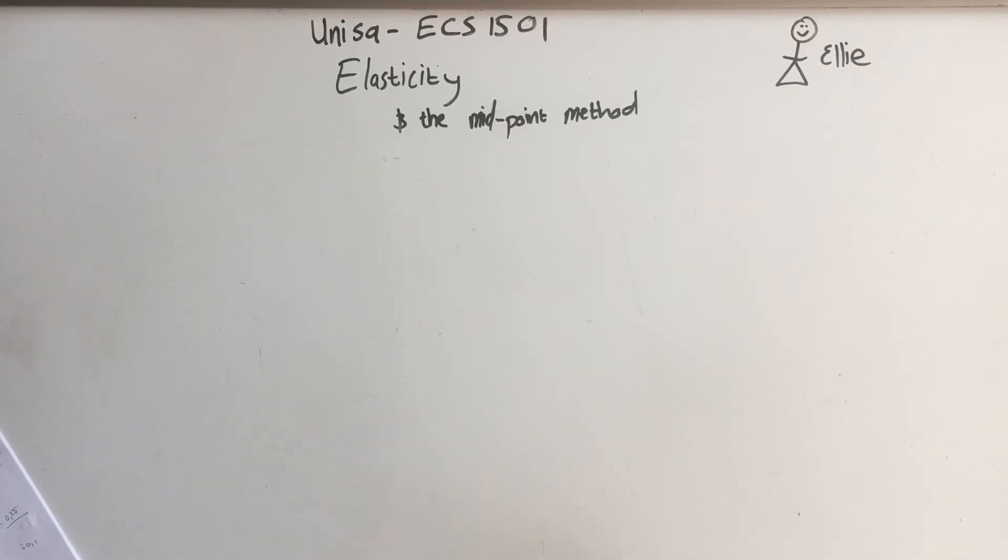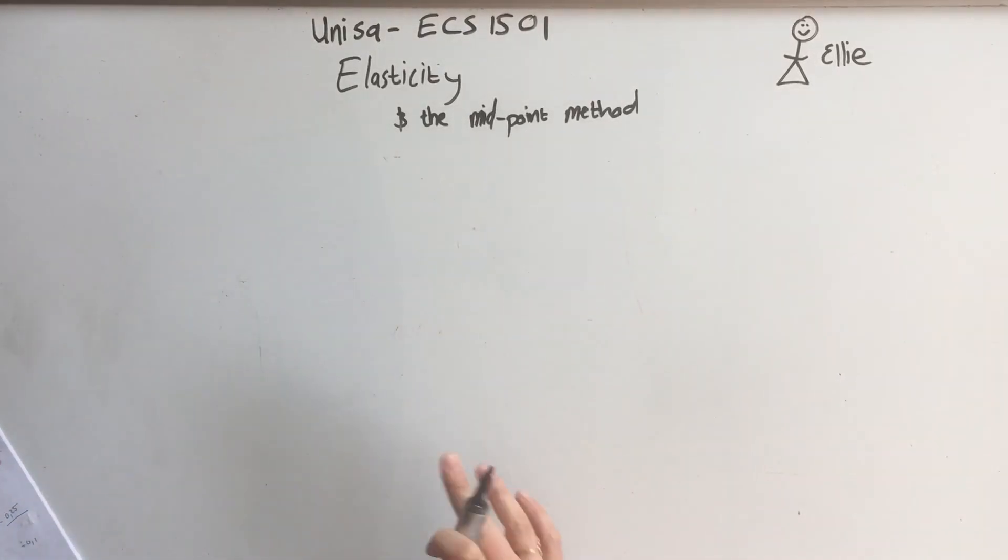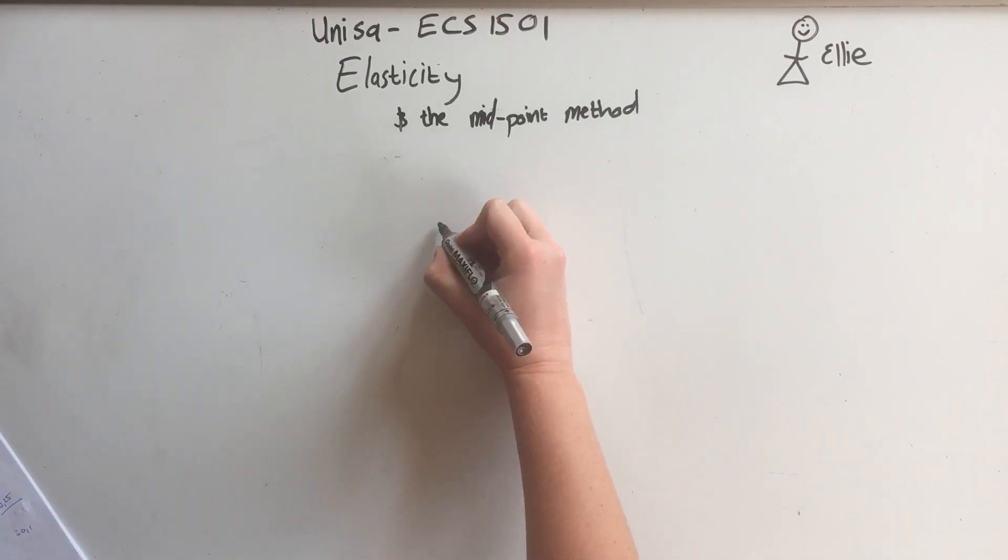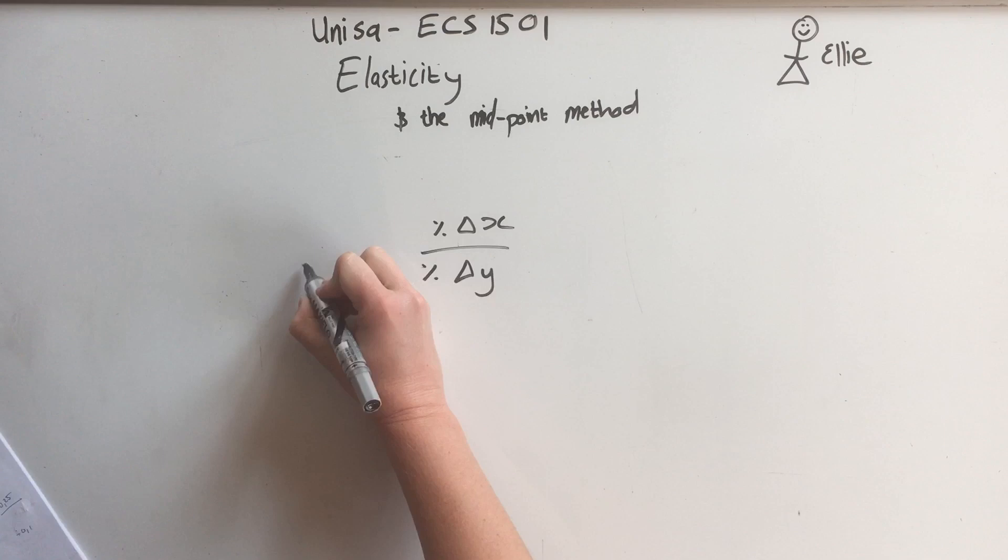Okay, take two on elasticity. This time we're going to do the midpoint method, this is pretty much from question 3.6 onwards. The midpoint method says the percentage change in X over the percentage change in Y will give you the price elasticity of demand.